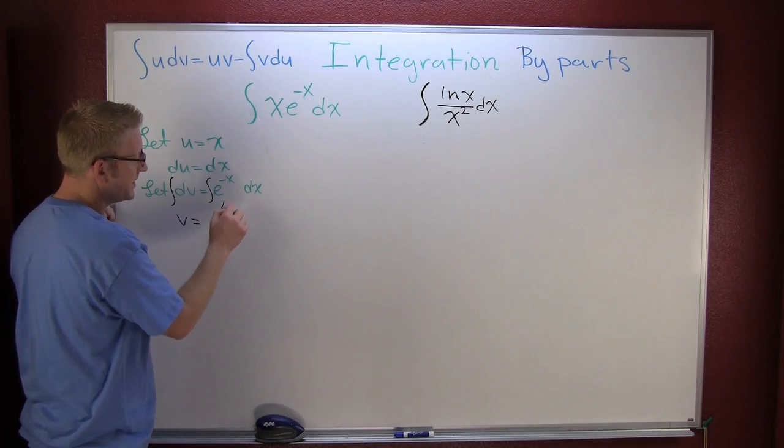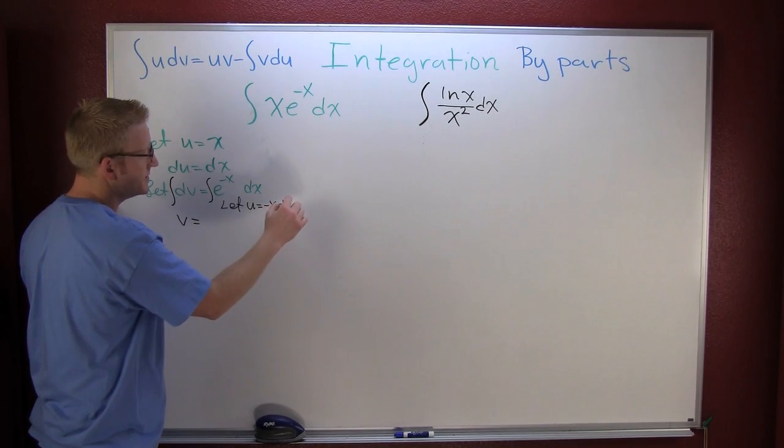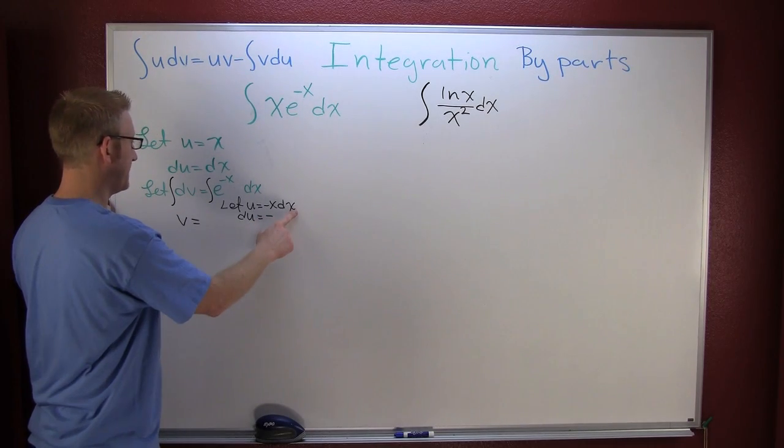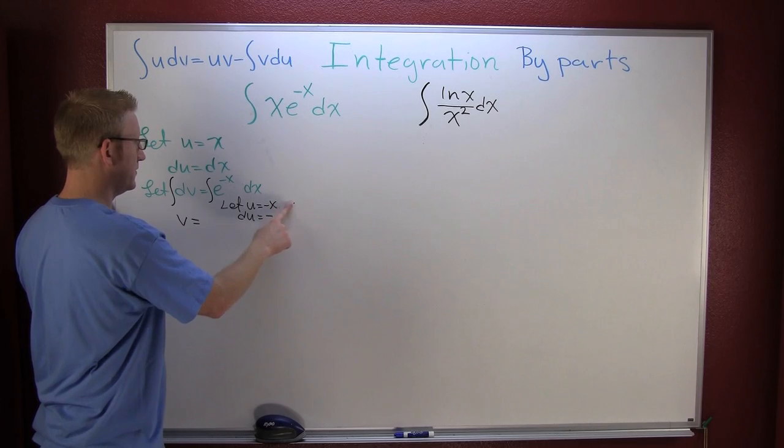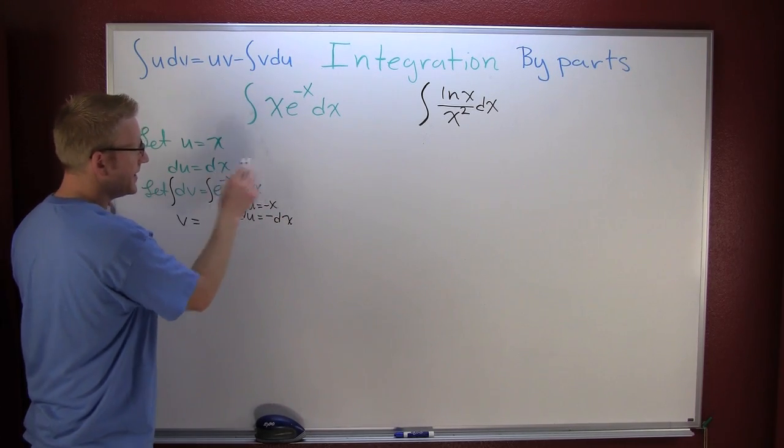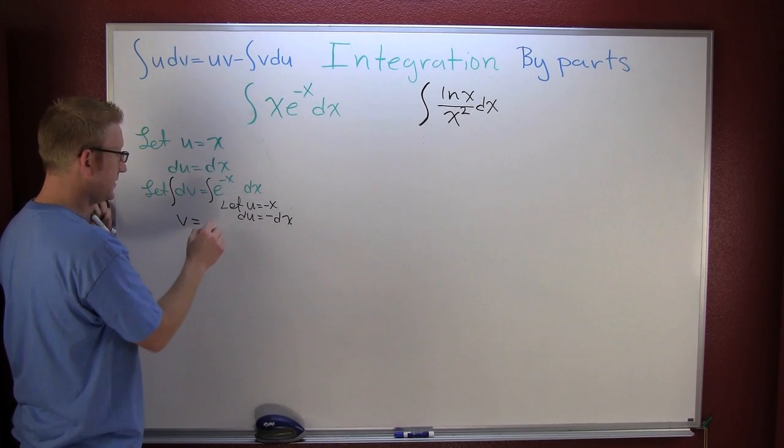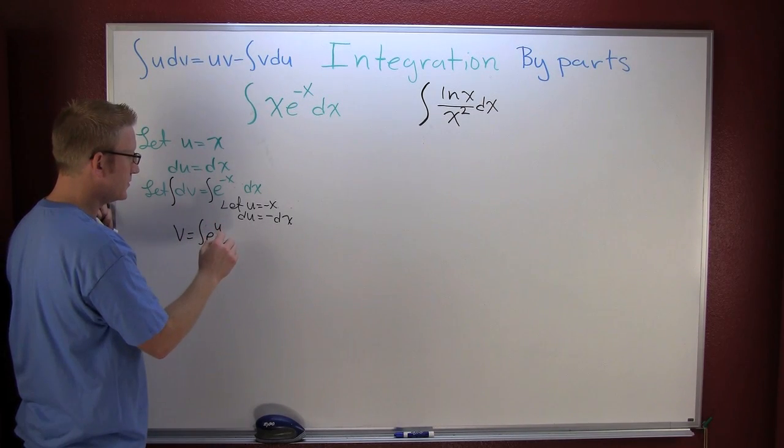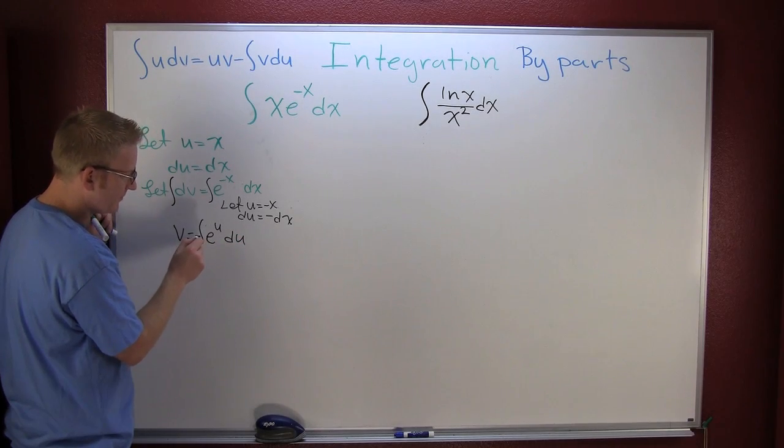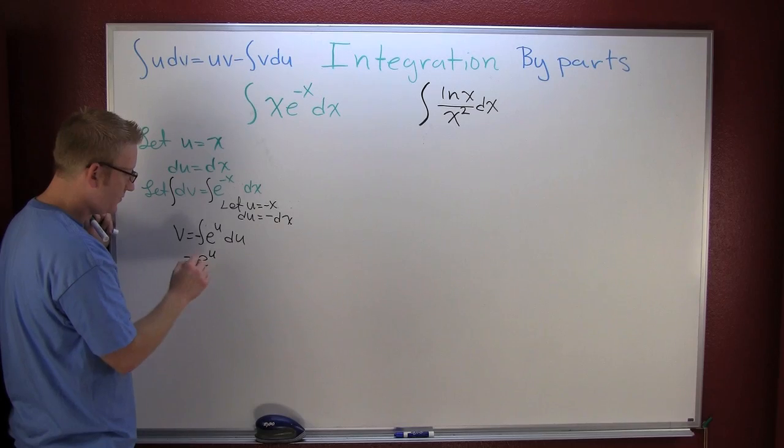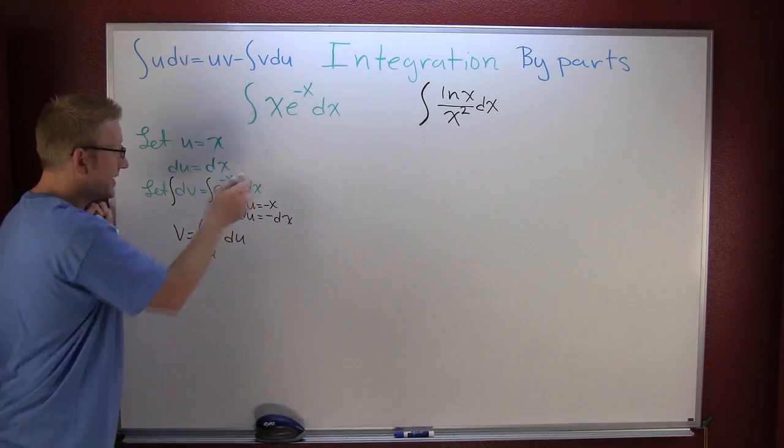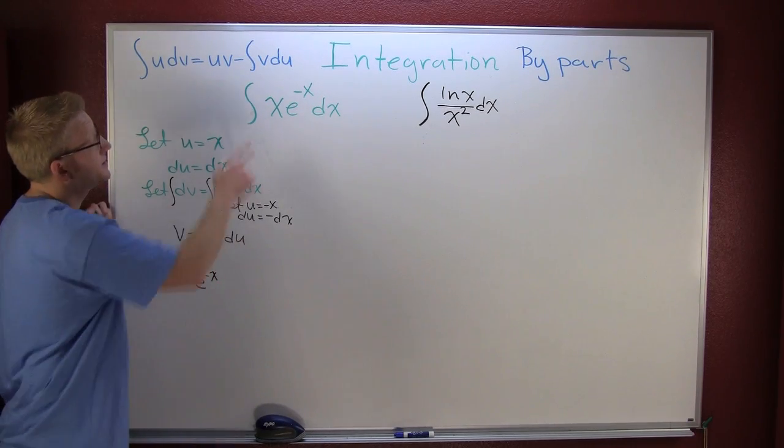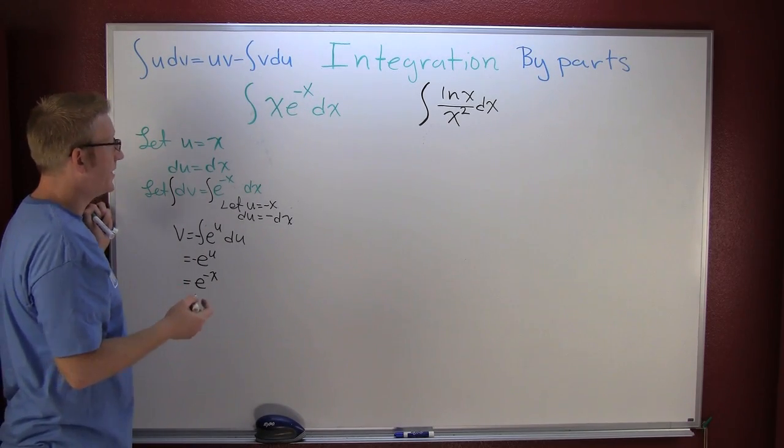And then on the right I gotta make a little u-sub. I'm gonna let u equal minus x, so then du turns out to be minus dx. And then I can make my substitution back in here. This is the integral e to the u du once I get that minus sign out front, and then I can integrate that. That's e to the u. Back substitute in my x, and this is going to be e to the minus x.